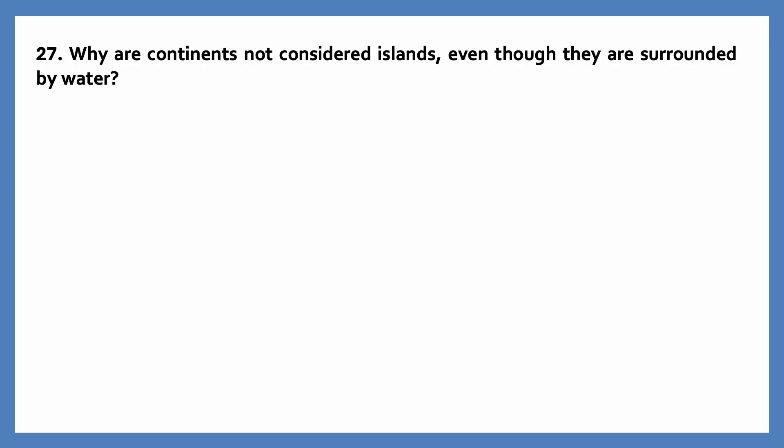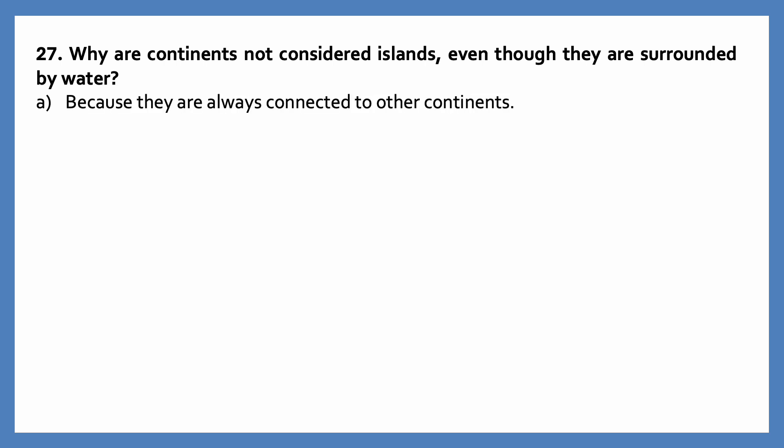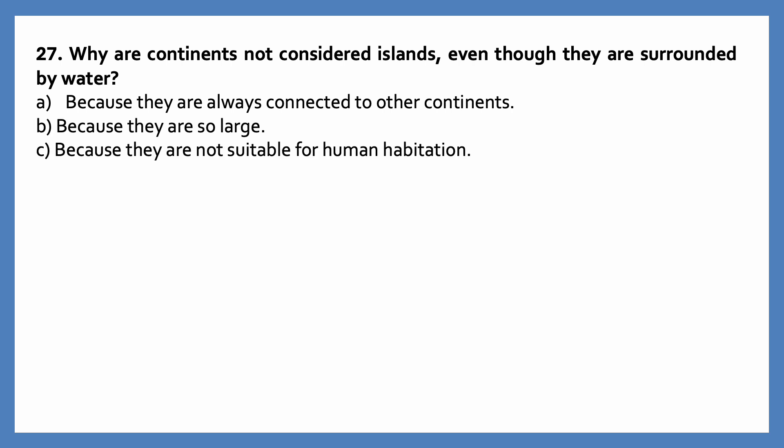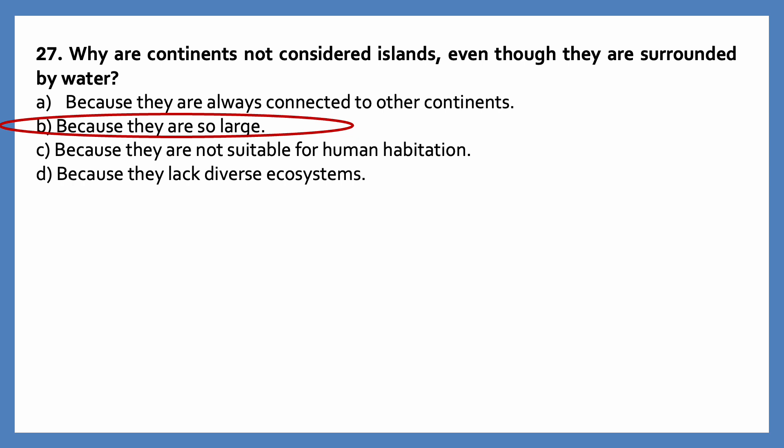Why are continents not considered islands, even though they are surrounded by water? Options are: because they are always connected to other continents; because they are so large; because they are not suitable for human habitation; because they lack diverse ecosystems. The correct answer is because they are so large — continents are not considered islands even though they are surrounded by water.